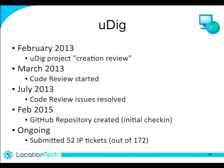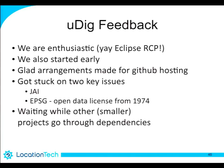Once the initial code review was complete, we sat on it because LocationTech only had their own internal Git repository at the time. We waited until February of this year after they arranged to work with GitHub. We have 172 five-minute dependencies to submit — I've submitted 52 so far, and I'm holding back waiting for other teams to do their work first. We started a little early when the infrastructure wasn't quite set up yet.